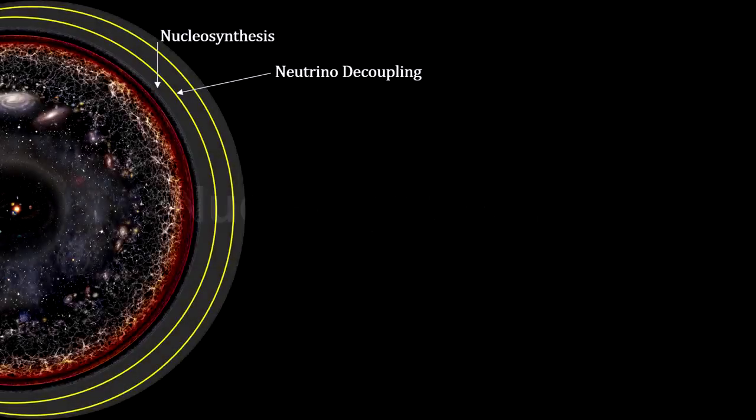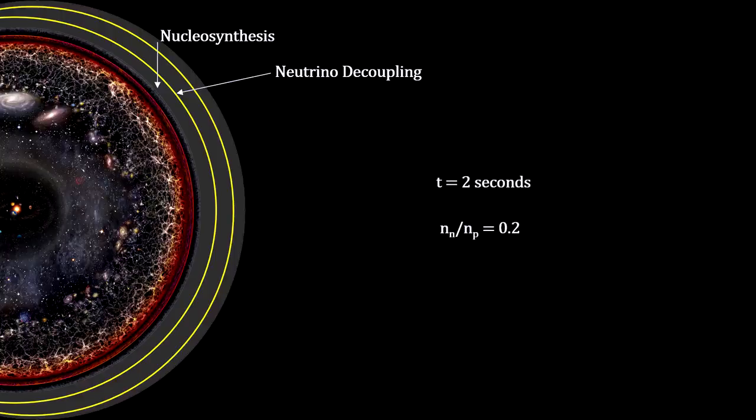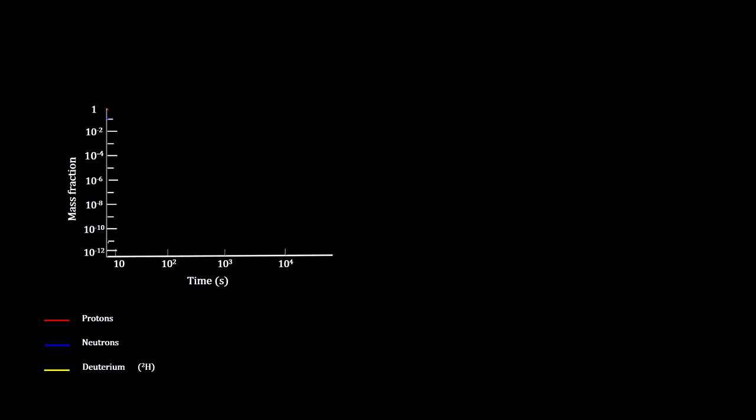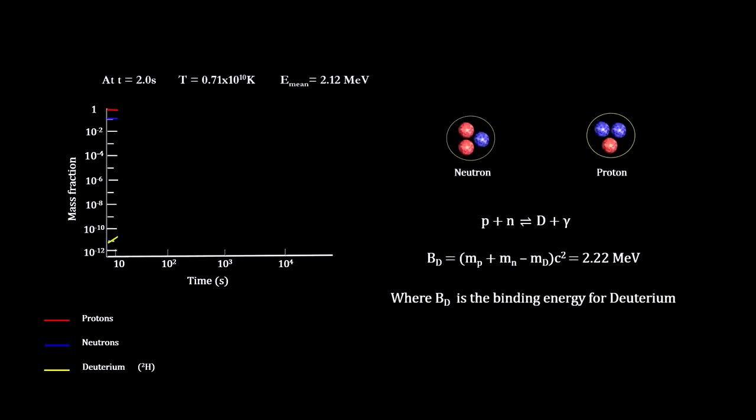The end of neutrino decoupling marked the beginning of nucleosynthesis. The universe was around two seconds old, with five protons for each neutron. Here we track the predicted ratios of each kind of nuclei as these processes evolved. At the start, there was sufficient energy for protons and the remaining neutrons to combine into deuterons, the nucleus of deuterium.